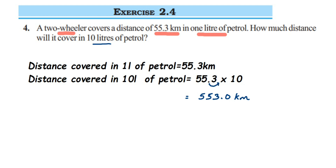In case you have 100, you move the decimal point two places to the right. You don't have to do full multiplication — just use this simple trick. So the answer is 553 kilometers. I hope it's clear. If you have further questions or doubts, you can drop a comment. Thank you so much for watching.